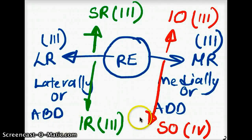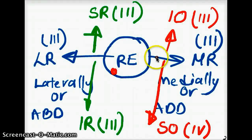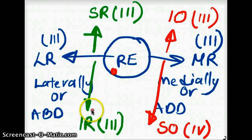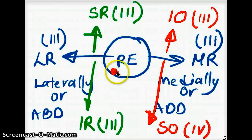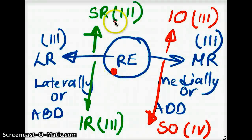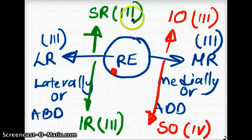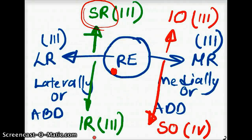In this case, the eye is abducted and depressed, meaning the eye has lost the ability to elevate from the abducted position. So our lateral rectus is fine, but our superior rectus is affected. Because after abduction, the eye has lost the ability to elevate. So the right superior rectus is the muscle that is paralyzed.